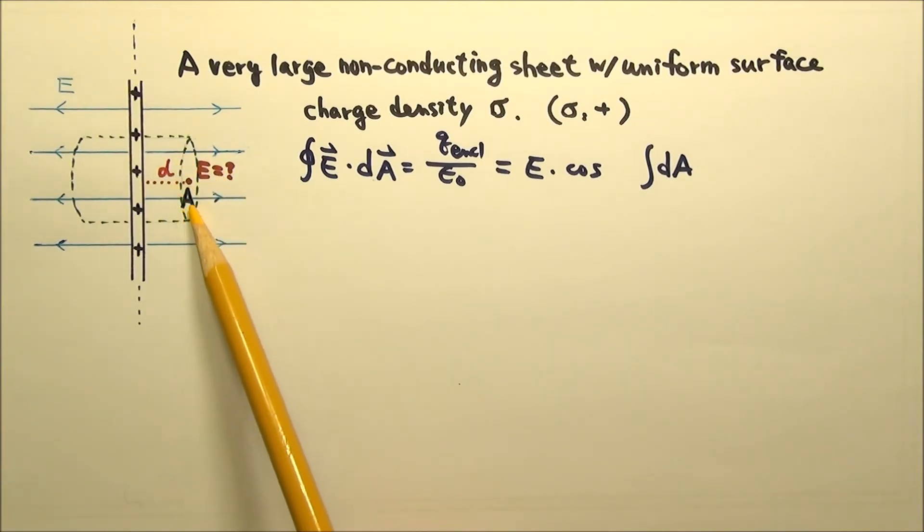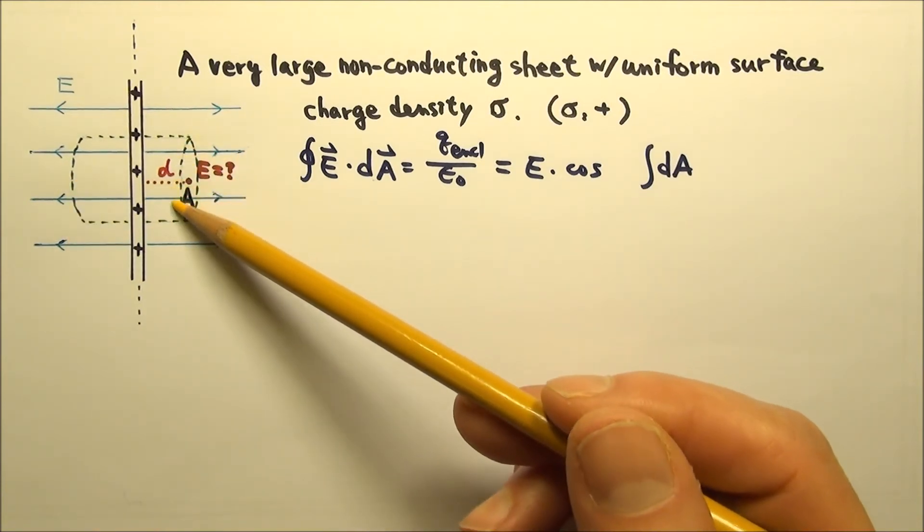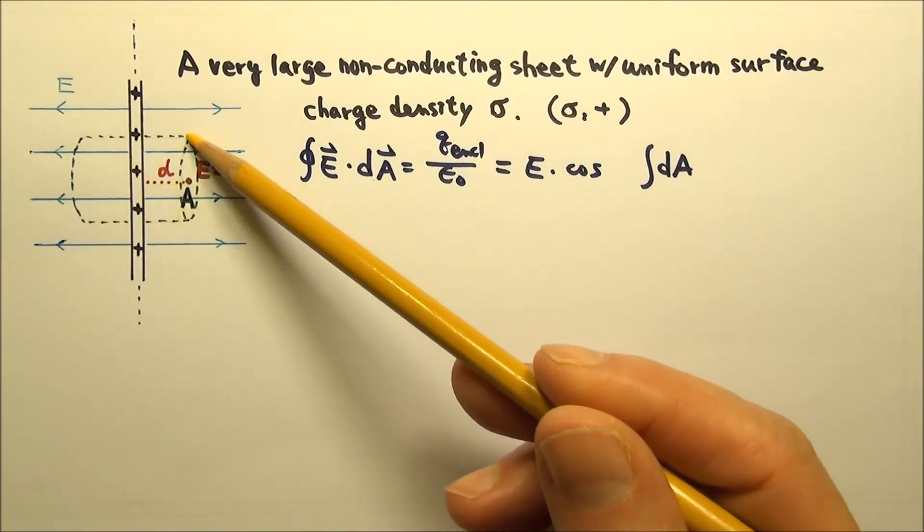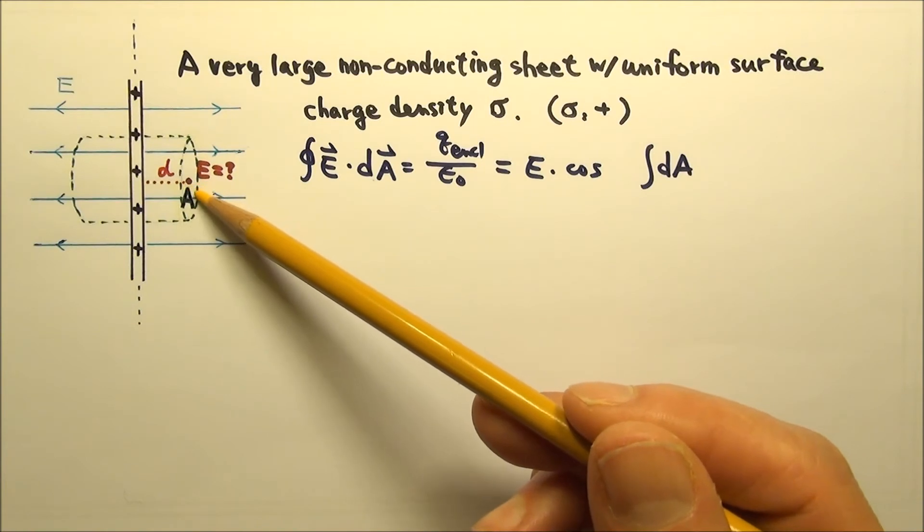I need this face of the cylinder to go through the point we are interested in. So this part has a distance d, and to make use of symmetry, this distance is also d. There is no requirement on the shape and size of the cross-section, so we can just make the cross-section round with an arbitrary area of A.